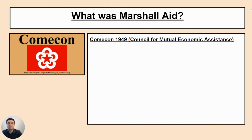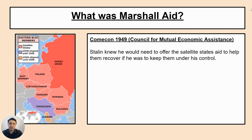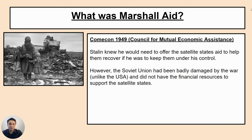Comecon, set up in 1949, stands for the Council for Mutual Economic Assistance — essentially about rebuilding the communist economies. America had simply thrown money at the problem, and Stalin knew he needed to offer the satellite states aid to keep them under his control. Places like Poland and Czechoslovakia had suffered during the war and needed to be rebuilt. However, unlike the USA, the Soviet Union had been badly damaged by the war and did not have the financial resources to support the satellite states in the same way.